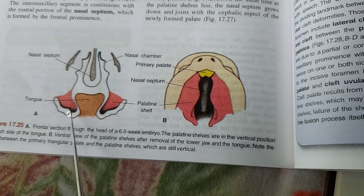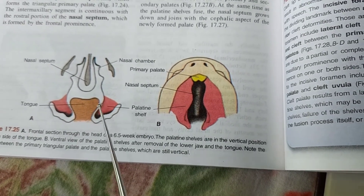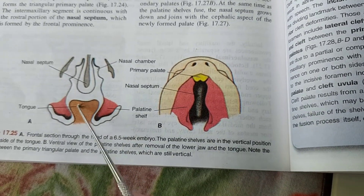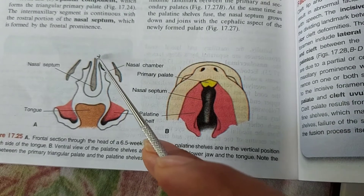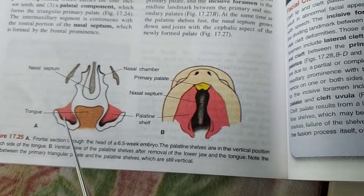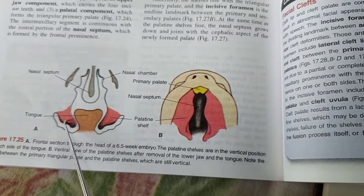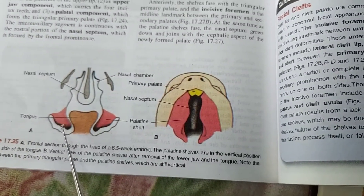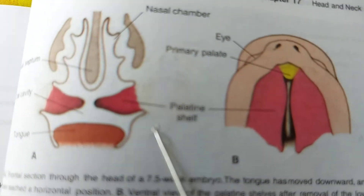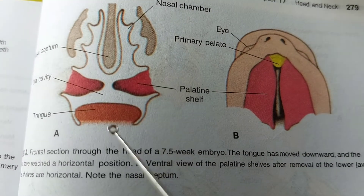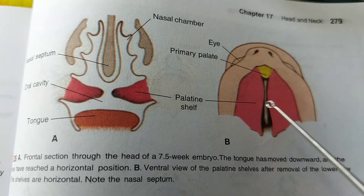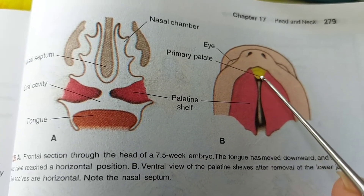The palatal shelf also develops from the maxillary process. Here we see the palatal shelf and the tongue. The septum turns downward from the frontonasal process. With time, the palatal shelf or palatine process, which remains at the side of the tongue, finally turns upward. This palatal shelf then fuses.